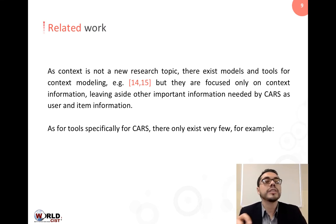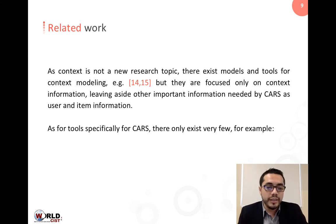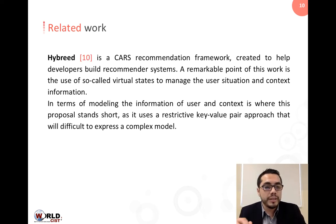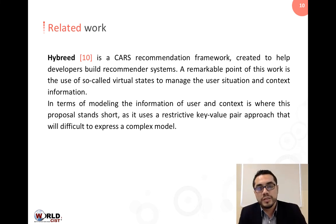As context is not a new research topic, there exist models and tools for context modeling, but these models focus only on context information, leaving aside other important information needed by context-aware recommender systems — like the user or item information. There also exist very few tools specifically designed for context-aware recommender systems. For example, Hybrid is a development framework that focuses mainly on the implementation of different recommendation algorithms. It contains many ready-to-use algorithms, but uses a very restrictive key-value approach to model information, making it difficult to express complex data models, as no relations between data are supported.